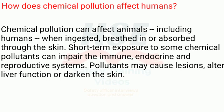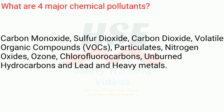How does chemical pollution affect humans? Chemical pollution can affect animals, including humans, when ingested, breathed in, or absorbed through the skin. Short-term exposure to some chemical pollutants can impair the immune, endocrine, and reproductive systems. Pollutants may cause lesions, alter liver function, or darken the skin.